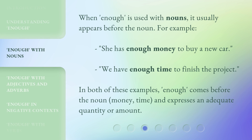When 'enough' is used with nouns, it usually appears before the noun. For example: 'She has enough money to buy a new car.' 'We have enough time to finish the project.' In both of these examples, 'enough' comes before the noun — money, time — and expresses an adequate quantity or amount.